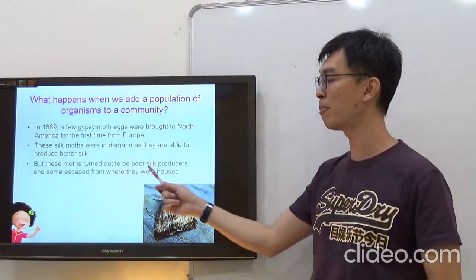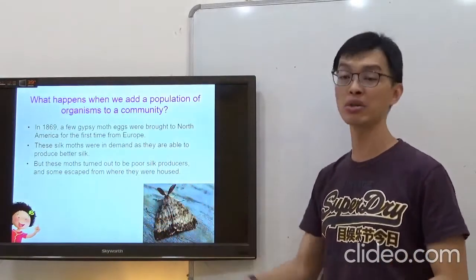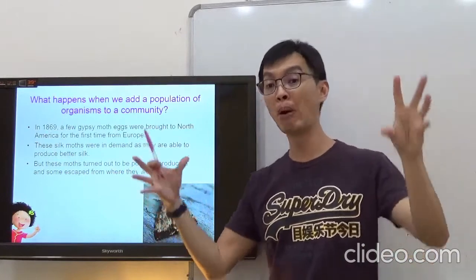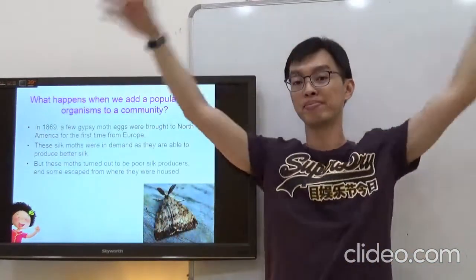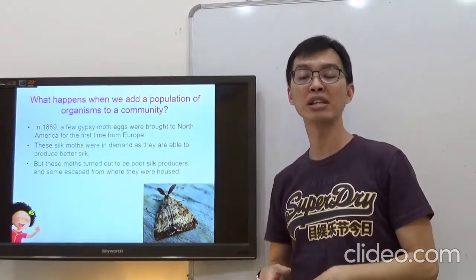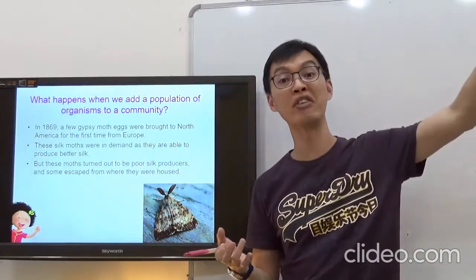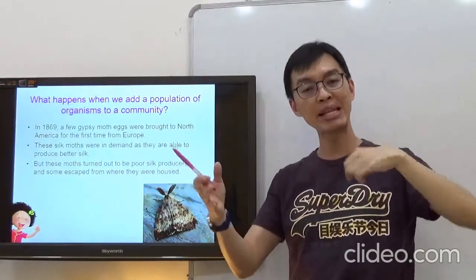But these moths turned out to be poor silk producers and some escaped from where they were housed. So when they bought in all these Gypsy moths, they built a farm for it just to keep them, to let them reproduce. But they realized that it wasn't so good after all. So some of them managed to escape out of the farm. It was fenced up, but they escaped out.